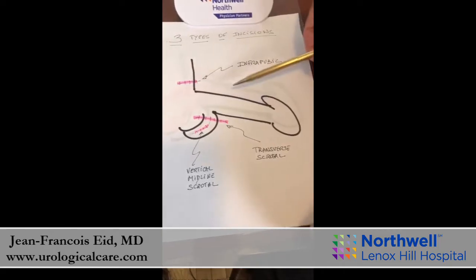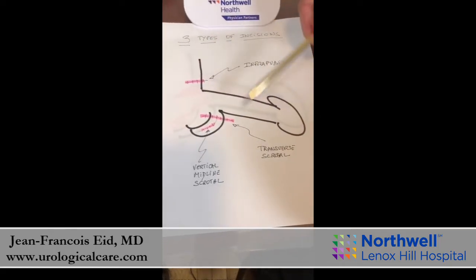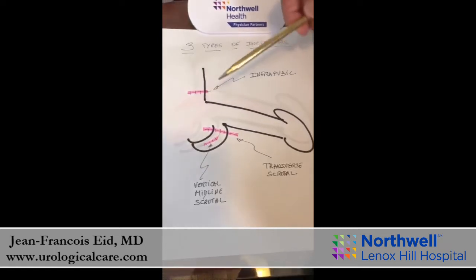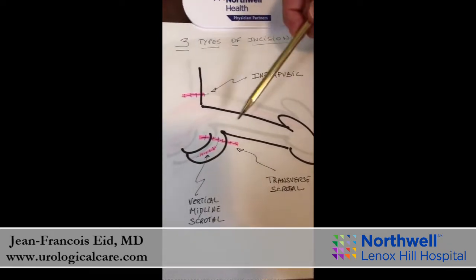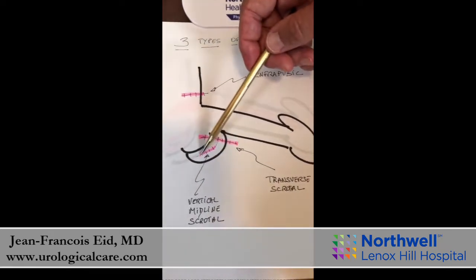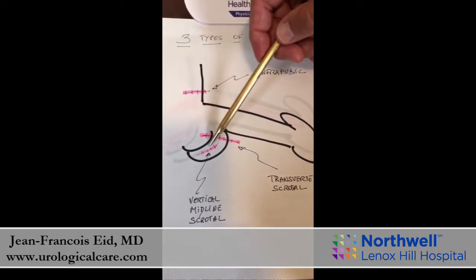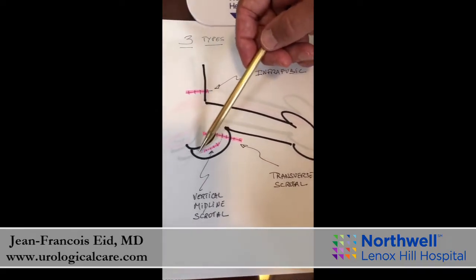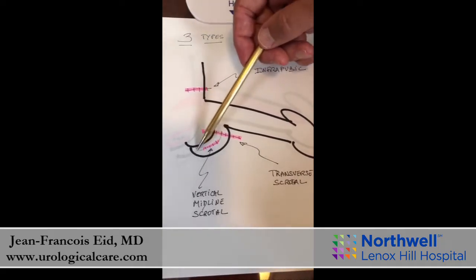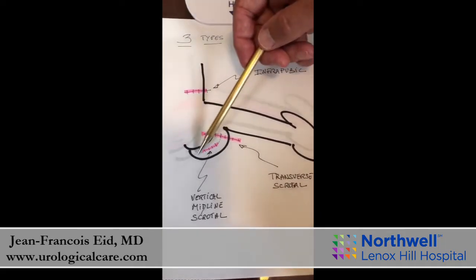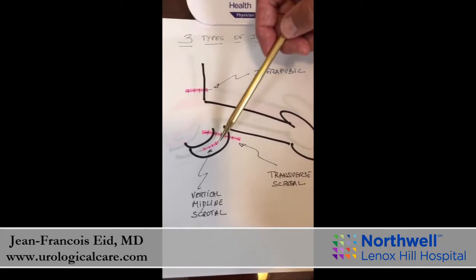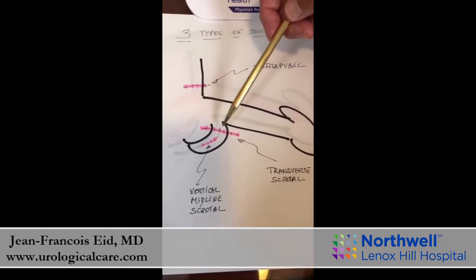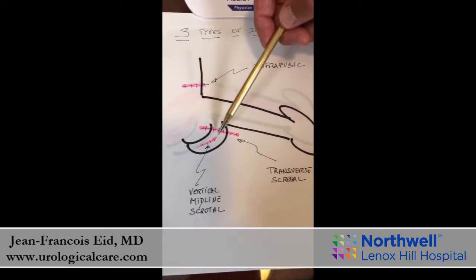As you can see from this illustration, when the incision heals, the most discreet and cosmetically appealing option will be the vertical incision in the scrotum. Why? Because it heals over the raffae — the line that men have between the two testicles — so it's concealed along that line.